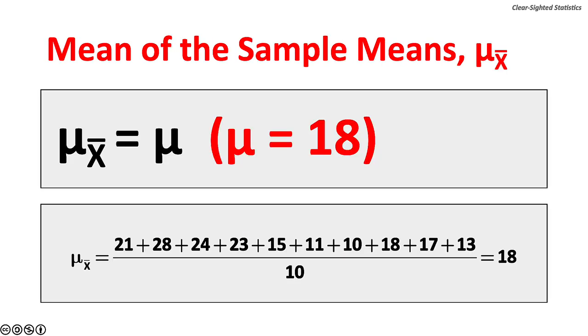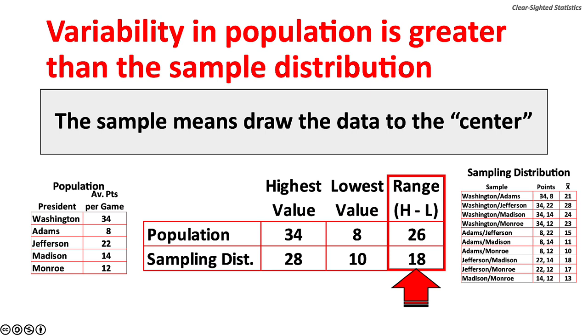The mean of the sample means mu sub x-bar equals 18, which is the same as the population mean. The variability, as measured by the range, is greater in the population than in the sampling distribution, 28 versus 18. The sampling distribution of sample means has less variability because the sample means draw the data towards the center.